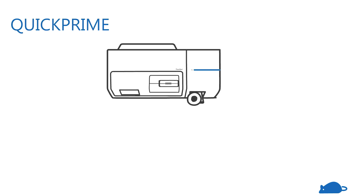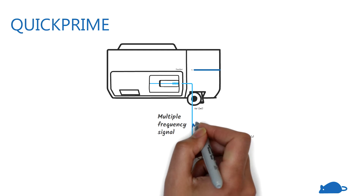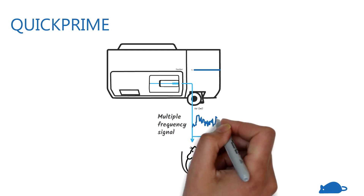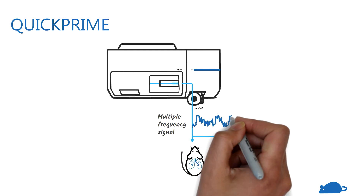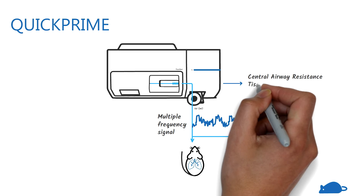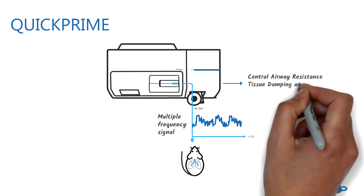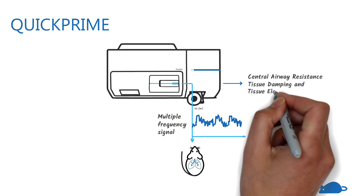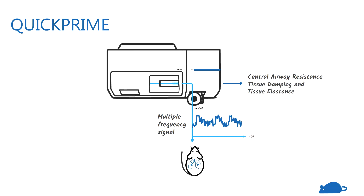In the Quick Prime measurement, the lungs are given a multiple frequency signal above and below the subject's respiratory rate. The flexiVent can then separate the contributions from the central airways and peripheral lung tissue to give central airway resistance, as well as tissue damping and tissue elastance.